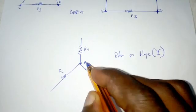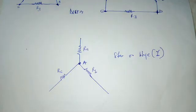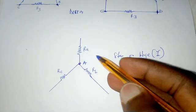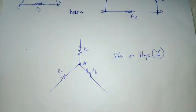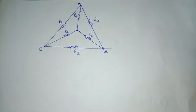Resistors in delta can be transformed to star, and resistors in star can also be changed to delta. Once we do that, some resistors tend to be in series or in parallel, and that helps us to find the effective resistance or the total resistance.